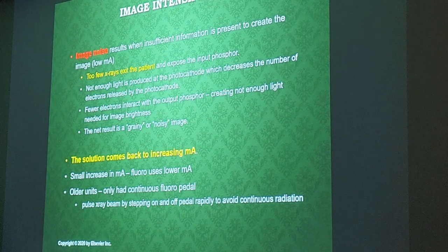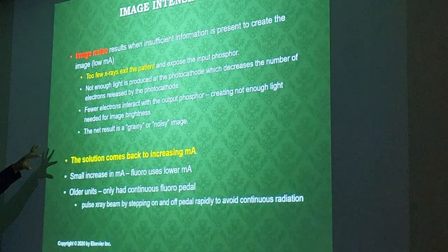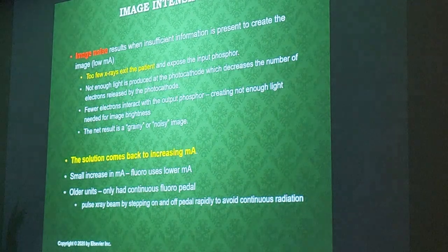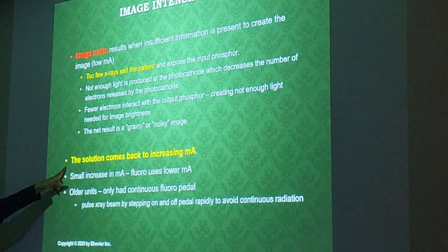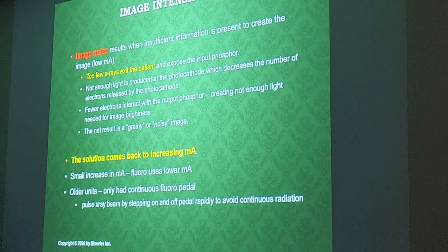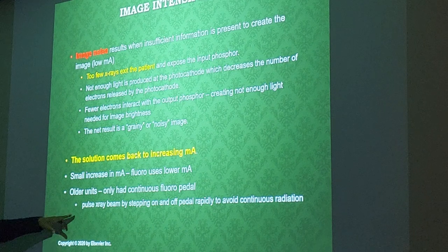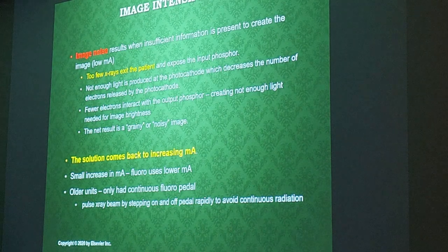Image noise can happen any time we have too low an mA — meaning too few x-rays exiting the patient, so fewer electrons interact with our output phosphor, creating less brightness and a grainy or noisy image. The solution is to increase the mA, but it's a small increase since fluoro uses a lower mA range. Using a pulsed x-ray beam is encouraged to keep patient dose low.